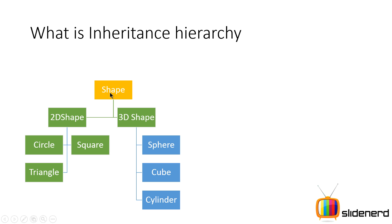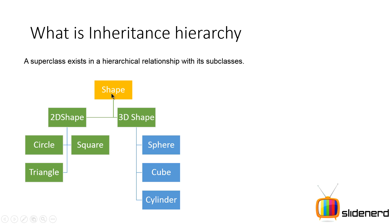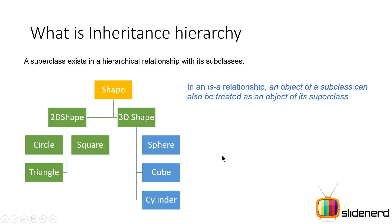Now let's talk about inheritance hierarchy. You have a class Shape. There are two types: 2D Shape and 3D Shape. 2D Shape is further divided into Circle, Square, and Triangle. 3D Shape is further divided into Sphere, Cube, and Cylinder. These are called hierarchical relationships. Shape is the superclass of everything. 2D Shape extends from Shape and adds some properties. Circle extends from 2D Shape and adds a property like radius. Square adds a property like side, and Triangle has half times base times height for its area.